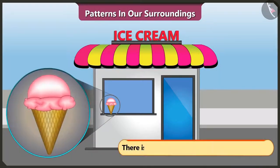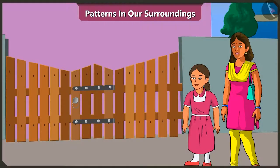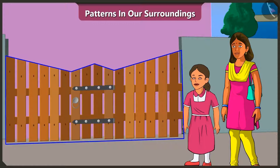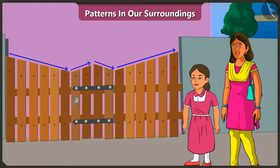And the ice cream cone also has a pattern. Yes, Vinny, we talked all the way and reached home so soon. Hey, the door of our house also has a pattern. Rightly said, Vinny. The strips here have a pattern of big to small, small to big — initially big to small and then small to big strips have been used.